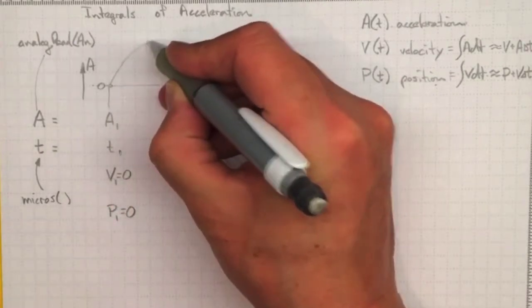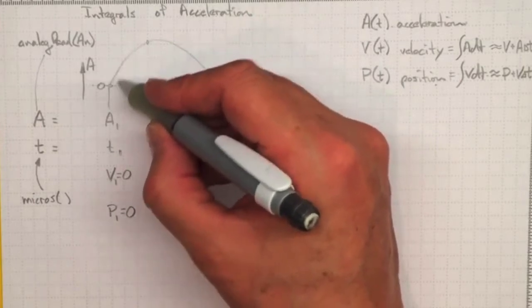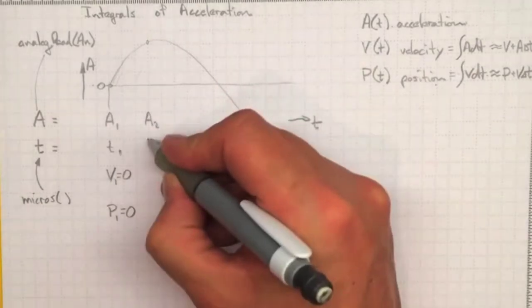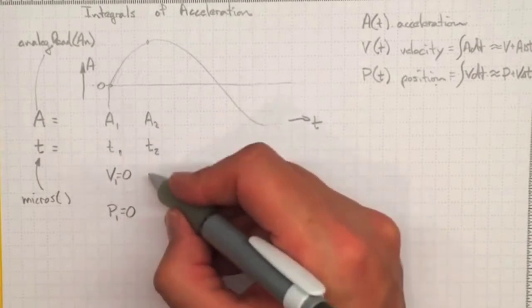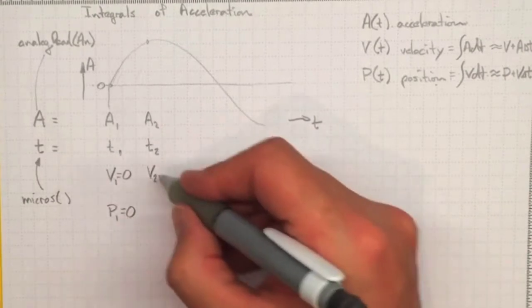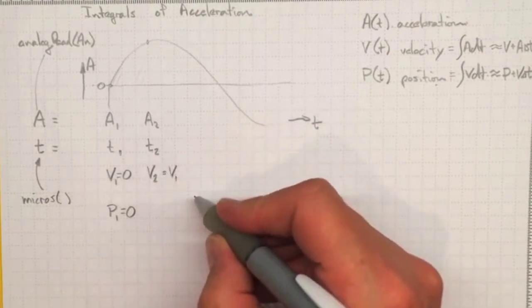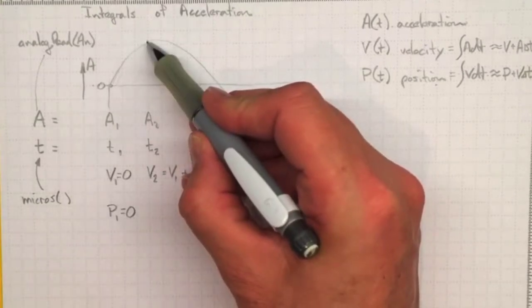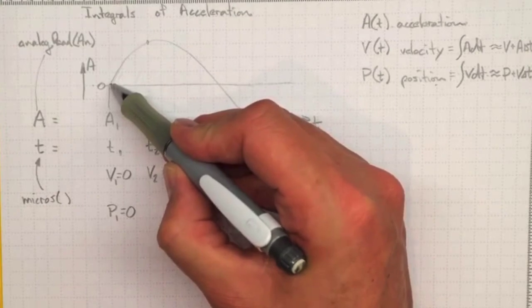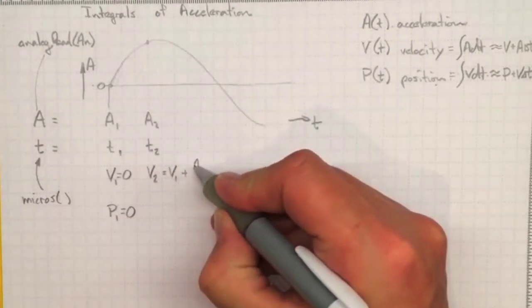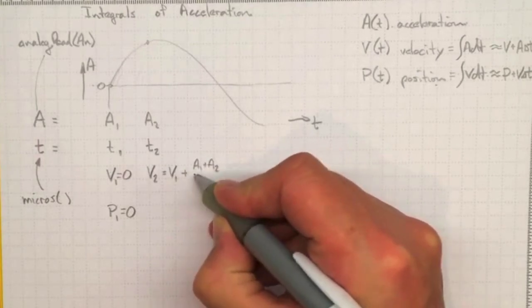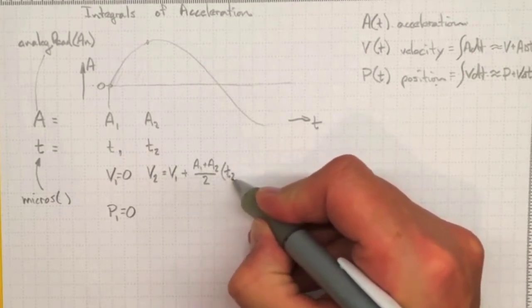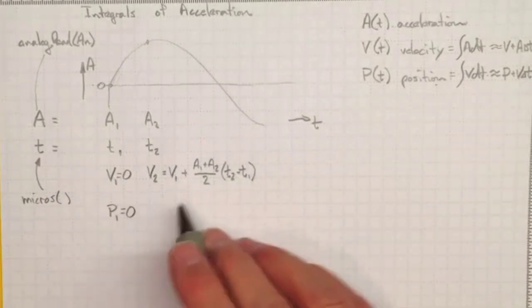So if we go to our next data point we want to integrate under that whole curve for the acceleration. We'll measure a2 and t2. We can approximate v2. Well it'll be whatever velocity we were going at time one plus some acceleration, a1 plus a2 over 2 times delta t would be t2 minus t1. There's an estimate of the velocity.